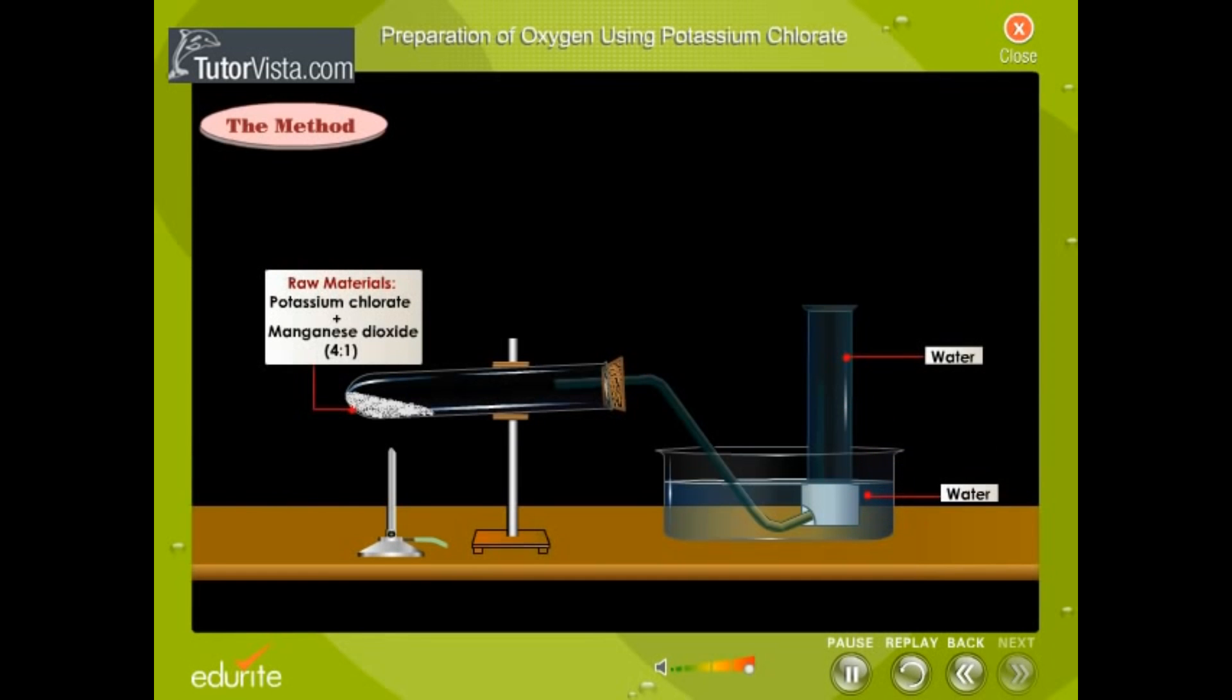Take a mixture of potassium chlorate and manganese dioxide in the ratio of 4 to 1 by weight in a hard glass test tube.